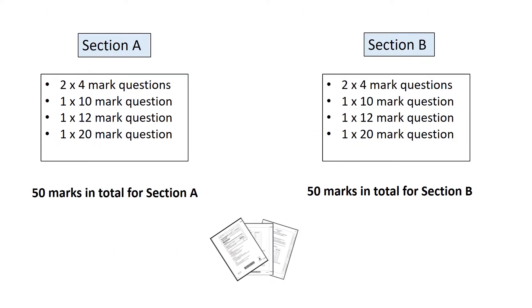The structure of this paper is similar to Paper 1. In Section A and Section B you'll have two 4-markers, one 10 marker, one 12 marker, and one 20 marker.